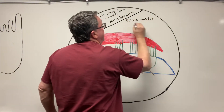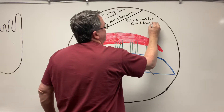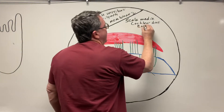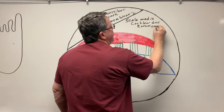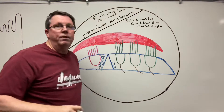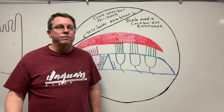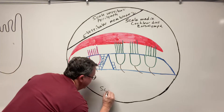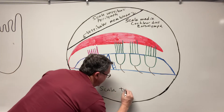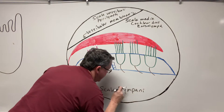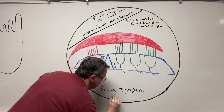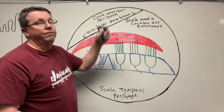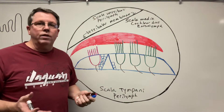I actually prefer the name the cochlear duct, and I'll probably use these interchangeably. The cochlear duct contains a fluid called endolymph. The difference between endolymph and perilymph is that perilymph has more sodium than potassium, while endolymph has more potassium than sodium. Down here we have another tube called the scala tympani, which also contains perilymph. The scala tympani and scala vestibuli actually meet inside the cochlea at the helicotrema.